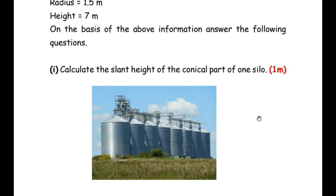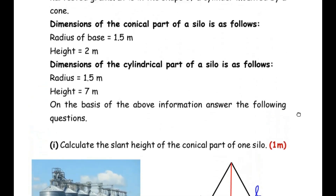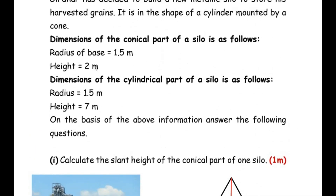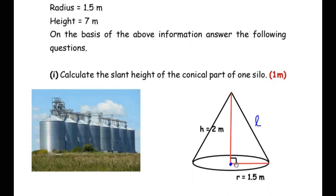Let me draw the cone separately over here. So this is how the conical part looks. Now the height of the cone in the question is given as 2 meters and the radius of the base is 1.5 meters. So here the base of this cone has its radius marked as 1.5 meters. We need to find out the slant height of this cone. We can see that this forms a right-angled triangle, where H is the perpendicular height, R is the base, and L represents the hypotenuse.